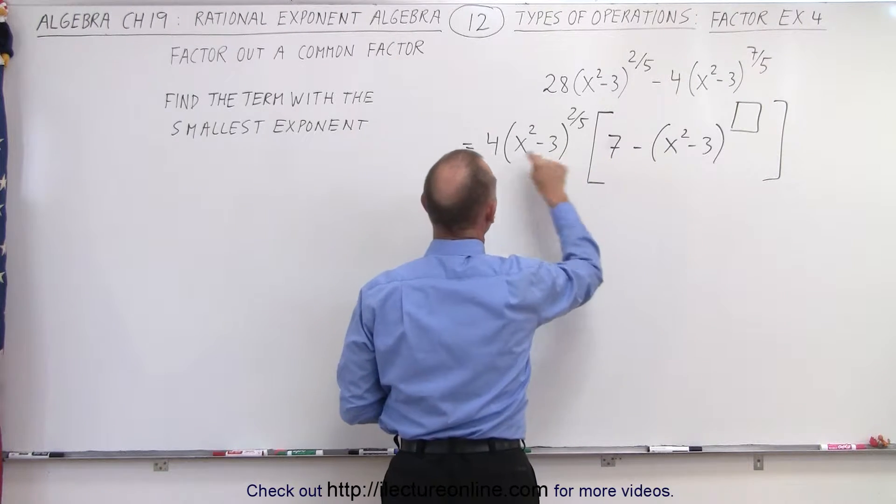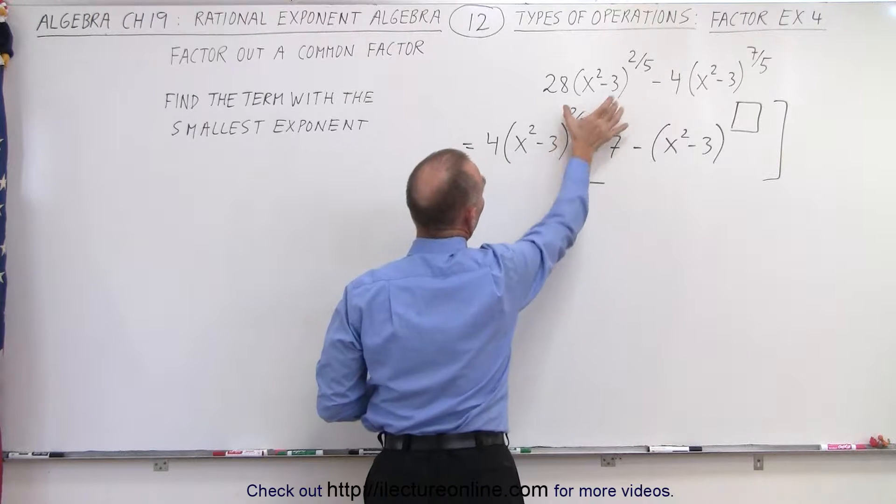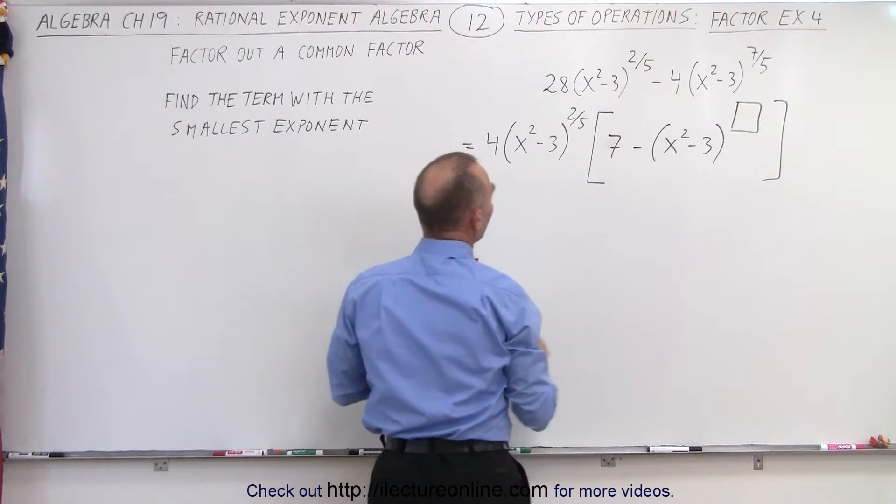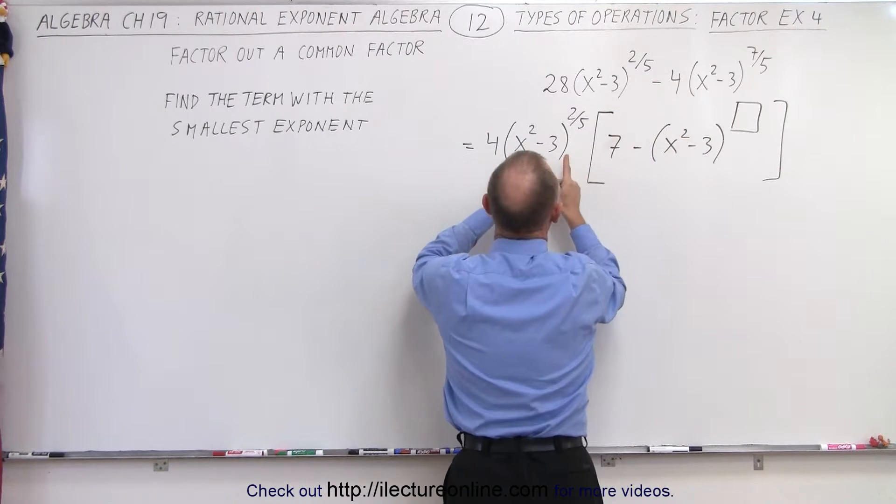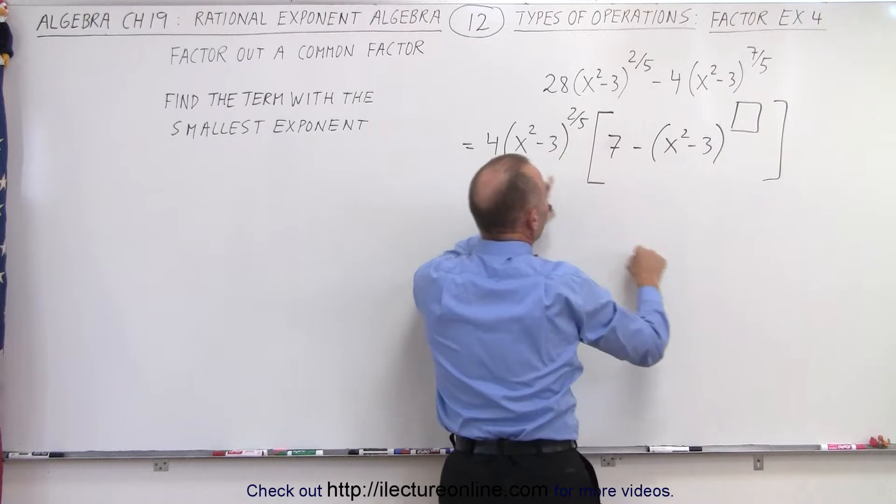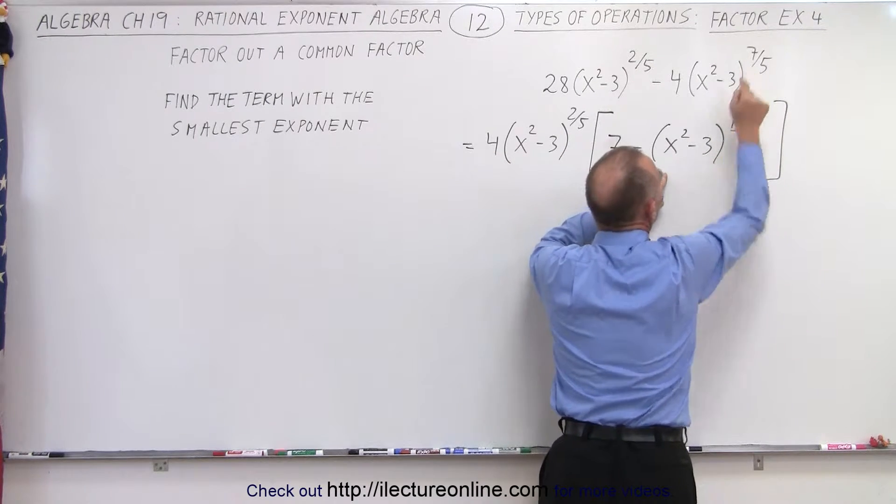First of all, recognize that 7 times 4 gives me 28 times x squared minus 3 to the 2 fifths power. We get that back. But when I multiply these two together, I should get 4 times 1 is 4, and x squared minus 3 to the 2 fifths power times x squared minus 3 to some unknown power will give me 7 fifths back.